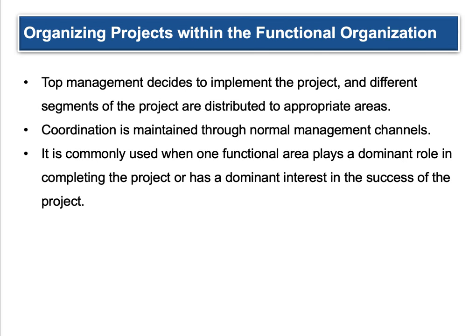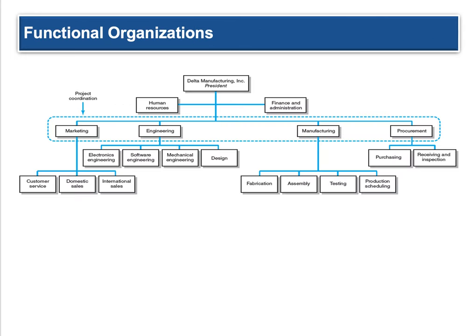In a functional organization, top management decides to implement a project and different segments of the project are then distributed to the appropriate existing areas. So nothing new is created — it's just that the responsibilities of the project are spread across the organization. Coordination is maintained through normal management channels. People still report to their superiors; they just have additional job responsibilities. It's commonly used when one functional area plays a dominant role in completing a project or has a dominant interest in the success of a project — for example, if engineering is designing a new product, they're kind of the lead on it.